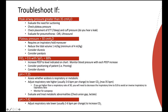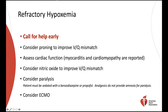In some patients, mechanical ventilation alone will not be enough to improve oxygenation, and patients may remain hypoxemic. It is important to call for help early. Consider proning to improve ventilation-perfusion mismatch. Assess cardiac function, as myocarditis and cardiomyopathy have been reported. Consider nitric oxide, a pulmonary vasodilator, to improve V/Q mismatch. Consider paralysis, remembering that patients must be sedated with a benzodiazepine or propofol. And finally, consider ECMO.